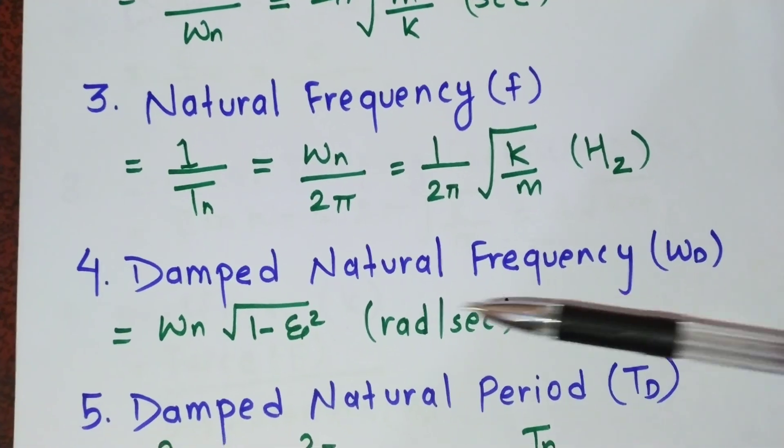The natural frequency f equals 1 by 2π root k by m, and its unit is Hertz. Damped natural frequency wd equals wn root 1 minus ξ squared, where ξ is the damping ratio, and its unit is radian per second.